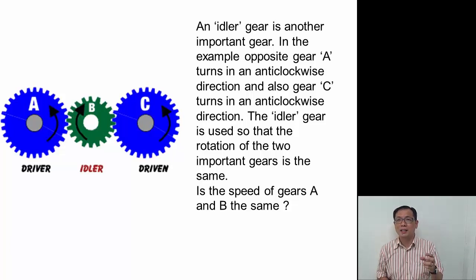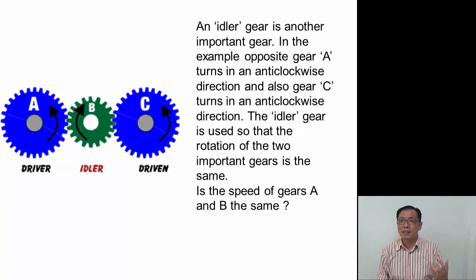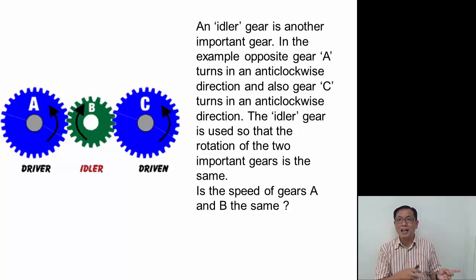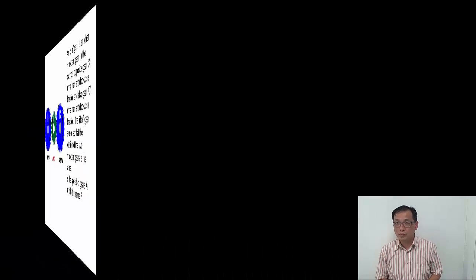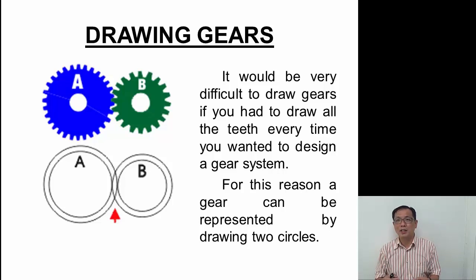In another example of a gear train, gear B is what we call an idler gear. Gear A and gear C will have the same speed, but gear B will rotate faster because it has a smaller number of teeth. Note that gear A and gear C both rotate in the same direction, while gear B rotates in the opposite direction. To draw gears on paper, we draw two small circles to represent each gear and show the meshing between them.